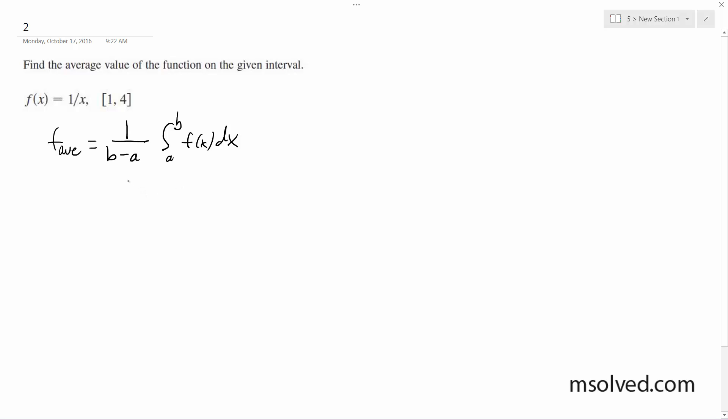We're going to have 1 over 4 minus 1, times the integral of 1 over x, dx. This ends up being equal to 1 third, ln x evaluated from 1 to 4.